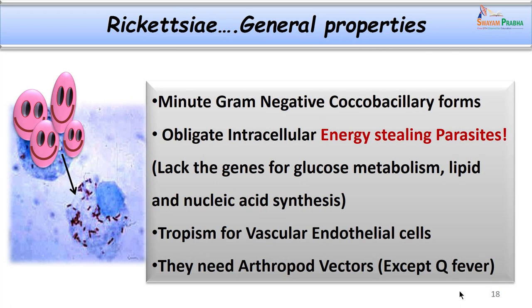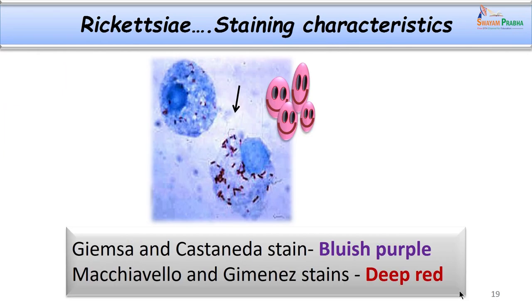They lack genes for glucose metabolism, lipid metabolism, and nucleic acid synthesis. These organisms have a peculiar tropism for vascular endothelial cells — this is the reason we see the typical rash. They need arthropod vectors for transmission, except Q fever. This is why the Coxiella group of organisms is not usually considered part of the Rickettsiae. Usually we will not see them under a light microscope when stained by Gram stain.